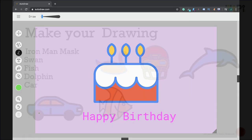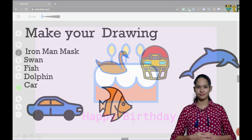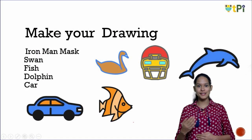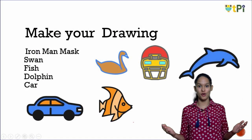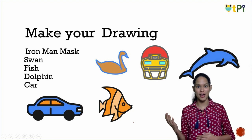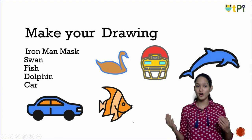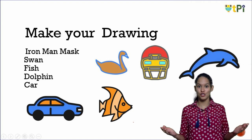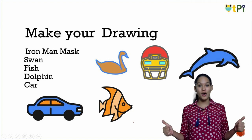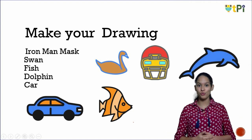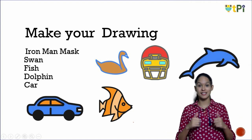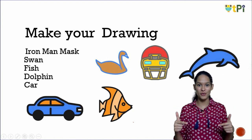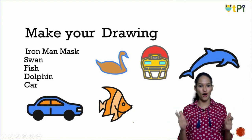Now that you're familiar with the AutoDraw tool, go ahead and draw something a little tricky like the Iron Man mask, or a simpler one like a swan, fish, dolphin, or a car. Pause your video and start drawing, but don't forget to come back quickly because we'll learn a lot more fun things about AI.